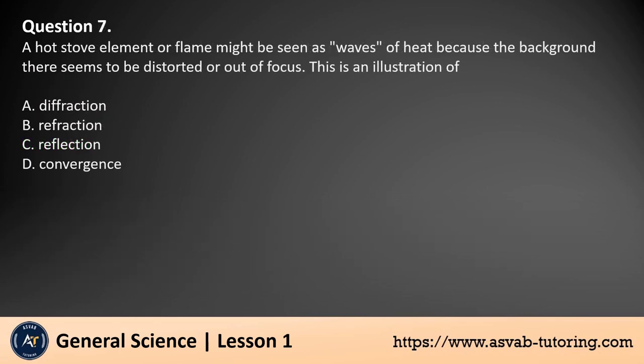Question 7. A hot stove element or flame might be seen as waves of heat because the background there seems to be distorted or out of focus. This is an illustration of: a. Diffraction. b. Refraction. c. Reflection. d. Convergence.